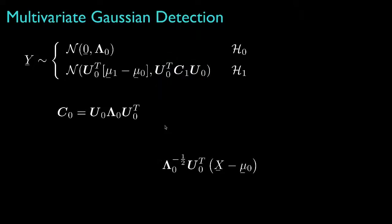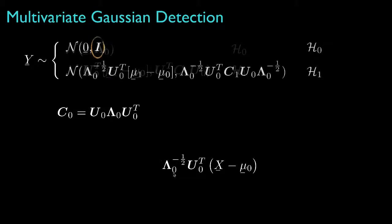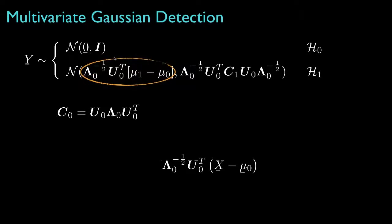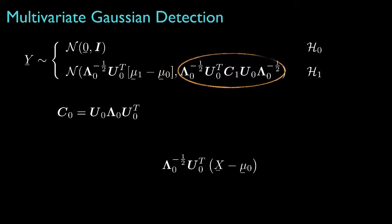Then, we could multiply by a diagonal matrix that is the square root of the reciprocal of the eigenvalues along its diagonal. By doing so, the covariance for hypothesis 0 would become an identity matrix so that we'll have the whitened data under hypothesis 0. The mean for hypothesis 1 will be transformed accordingly, as will the covariance.